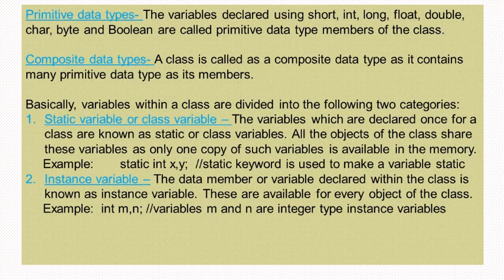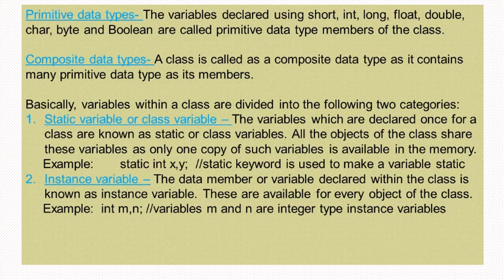The variables which are declared once for a class are known as static or class variables. All the objects of the class share these variables, as only one copy of such variables is available in the memory. For example, if we write the keyword static and declare a variable x of integer type, all objects of the class will use the same copy of the static variable x in memory — only one copy is made.